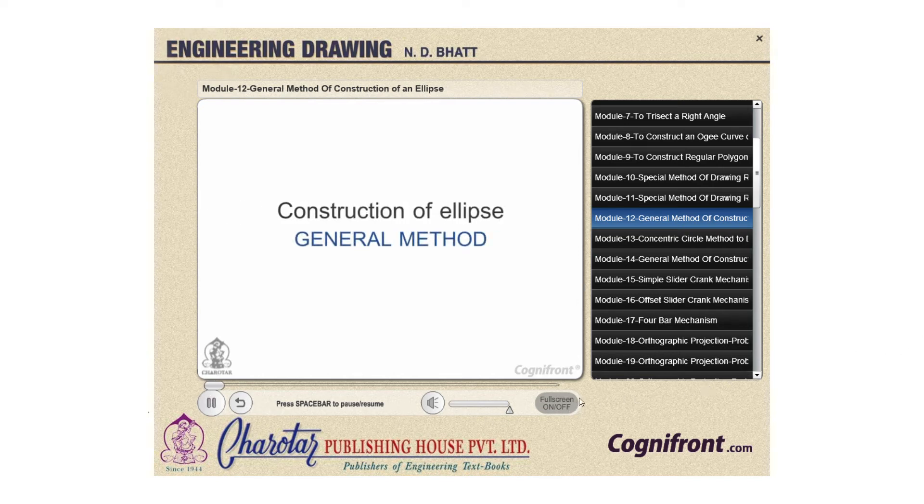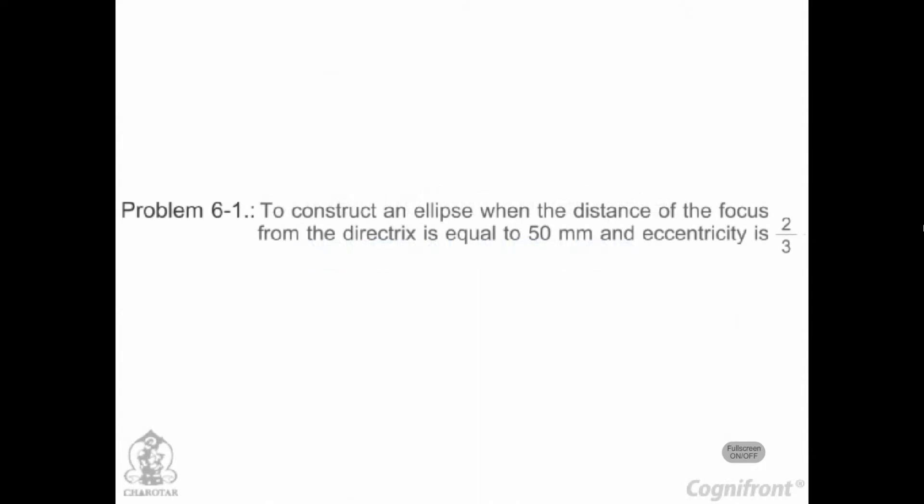General method of construction of an ellipse. Problem 6.1. To construct an ellipse when the distance of the focus from the directrix is equal to 50 mm and eccentricity is 2 by 3.